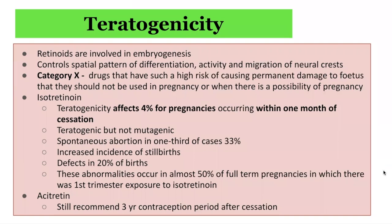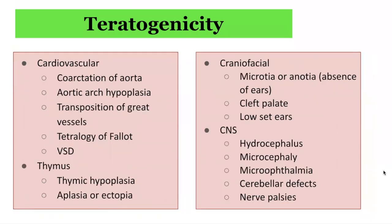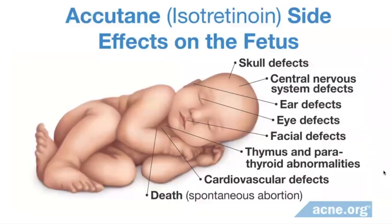That is why a three-year contraception period is recommended. The teratogenic effects of oral retinoids include impact on the cardiovascular system with defects in major vessels: coarctation of the aorta, aortic arch hypoplasia, transposition of the great vessels, tetralogy of Fallot, and ventricular septal defect. There can be thymic hypoplasia, aplasia, or ectopia. Significant craniofacial effects include microtia or anotia, cleft palate, and low-set ears. Central nervous system effects include hydrocephalus, microcephaly, microphthalmia, cerebellar defects, and nerve palsies. This image from acne.org summarizes key defects associated with isotretinoin.